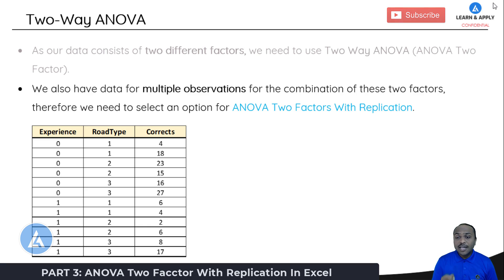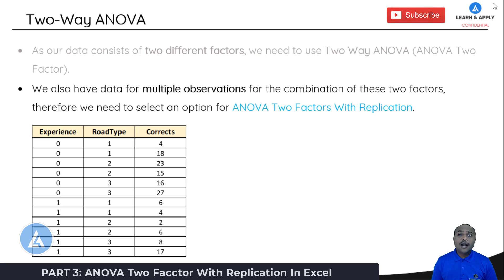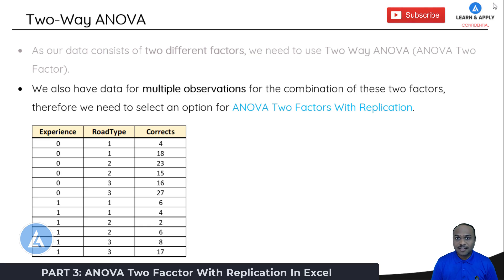Notice the phrase 'with replication' — this means we are going to repeat the experiments for the same combinations. After understanding what two-way ANOVA is and why it is used, let's jump into the practical example to see how to perform two-way ANOVA in Microsoft Excel.